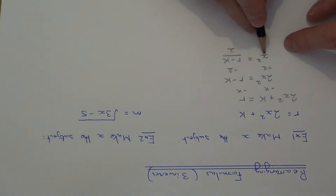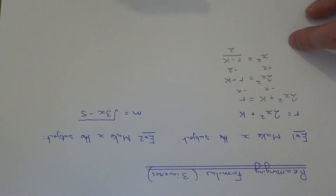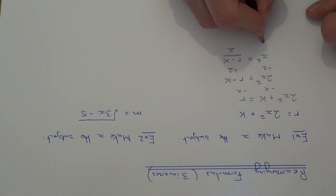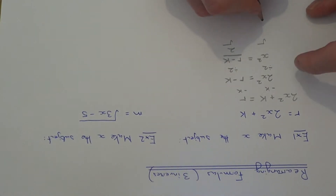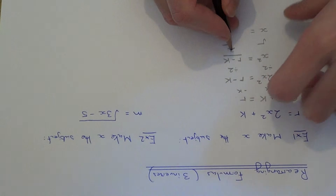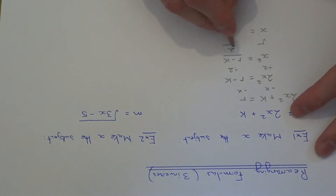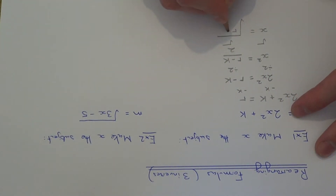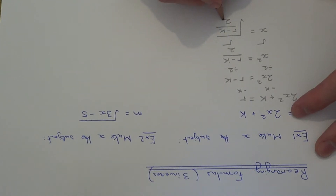The final step: x is now being squared, so what is the opposite function to a square? It's a square root, so we now need to square root both sides. That will get rid of the square off the left-hand side, and we just need to square root the fraction on the right-hand side. Make sure your square root goes all the way across the fraction.